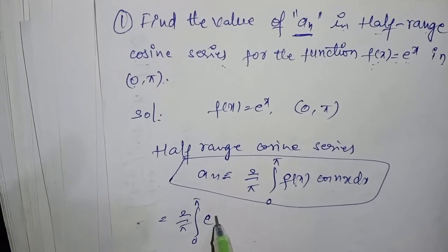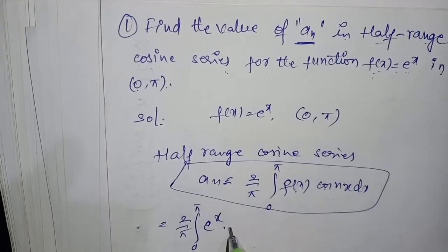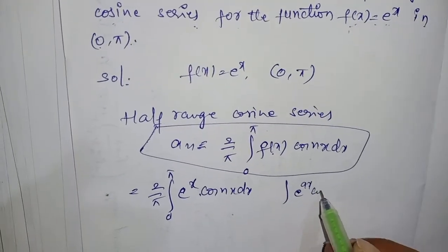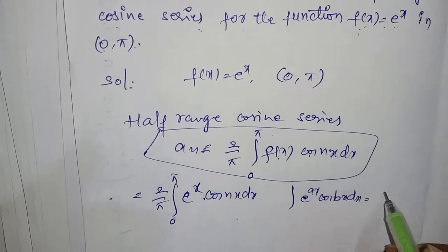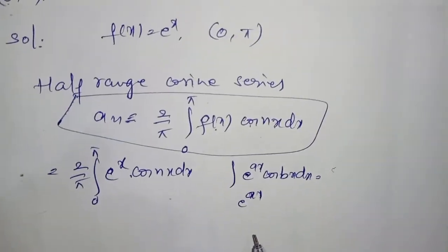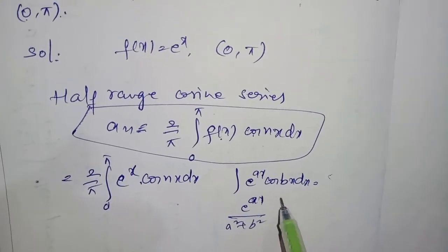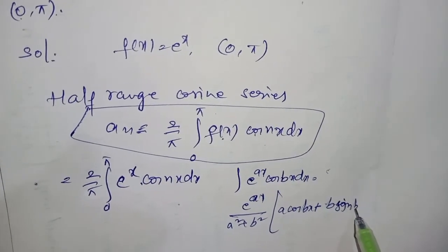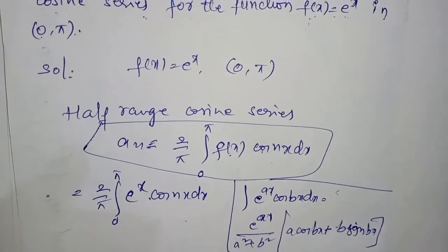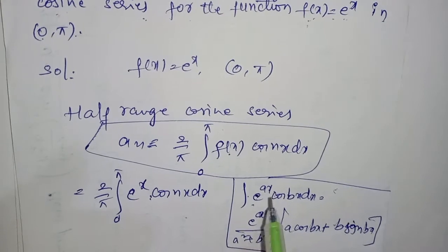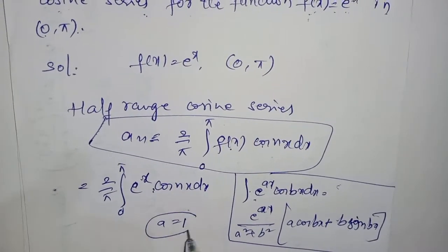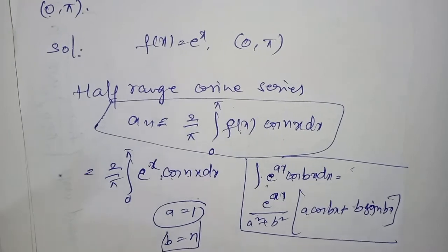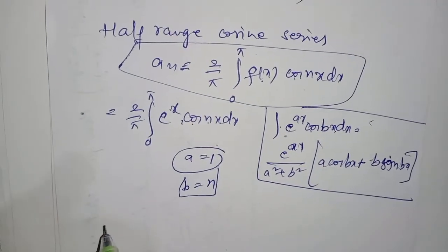We use the standard integral formula: ∫ eᵃˣ cos(bx) dx = eᵃˣ / (a² + b²) × (a·cos(bx) + b·sin(bx)). Comparing with our integral, eˣ corresponds to eᵃˣ, so a = 1. Since cos(nx) corresponds to cos(bx), we have b = n.